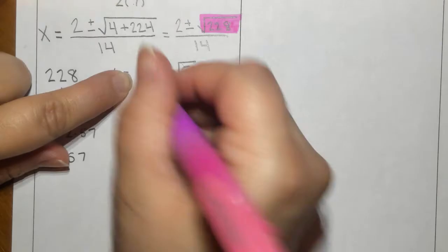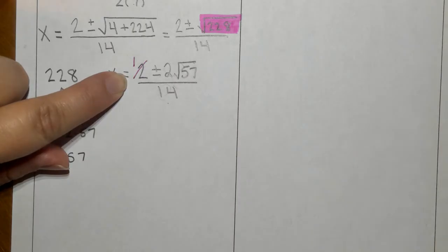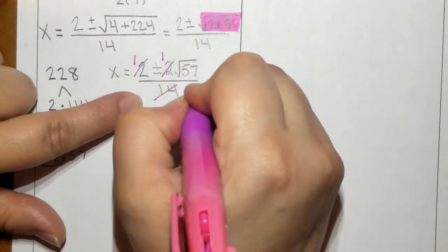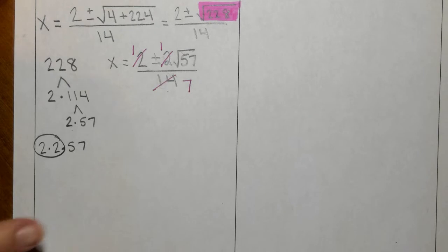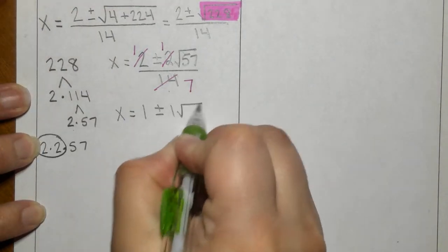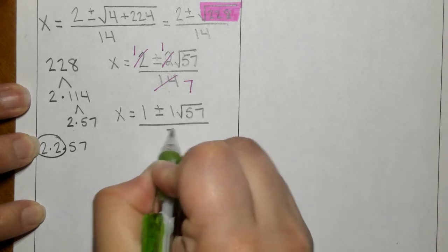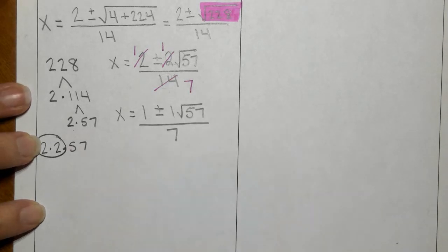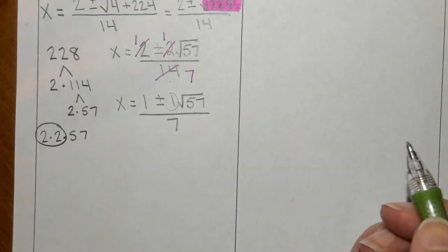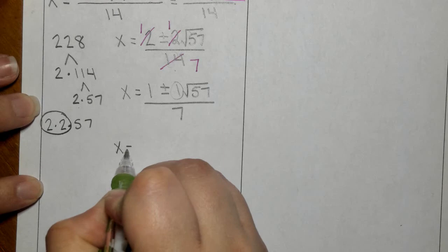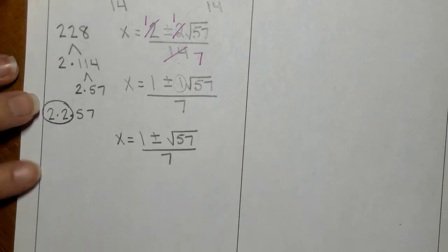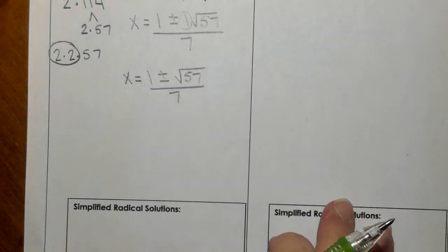Two divides into two one time, and two goes into two another time, one time. Two goes into 14 seven times. So my new solution looks like this. But the problem is, is that you never write the one in front of the radical, ever. So here is the actual solution. That I can jot down here.